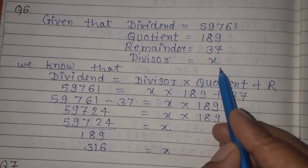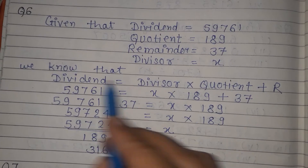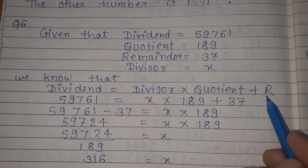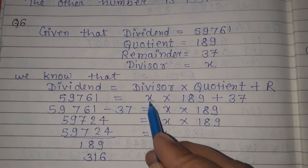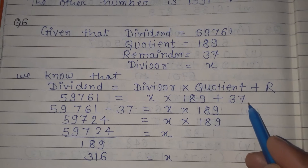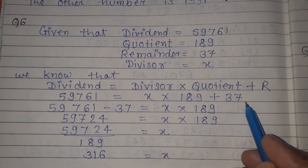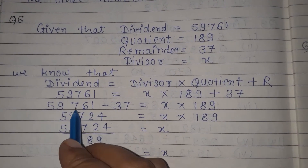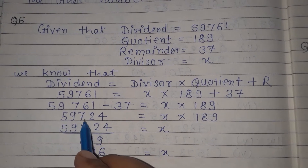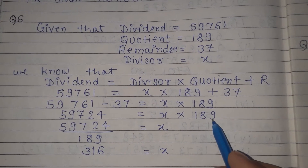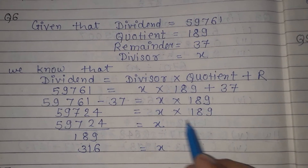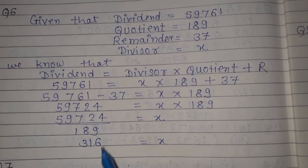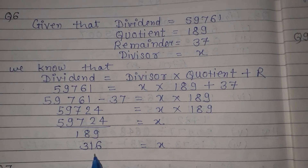So let the divisor be equal to X. We know the formula: dividend is equal to divisor into quotient plus remainder. We put in the values. Shifting 37 to the other side gives minus, so we get 59724 is equal to X into 189. Dividing both sides by 189, X is equal to 316.